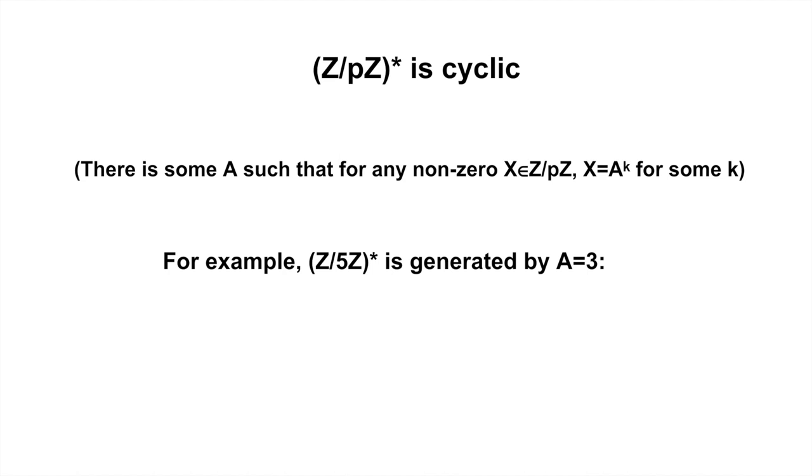For example, for p equals 5, we can choose a to be equal to 3, because the powers of 3 in Z over 5Z are 3, 4, 2, and 1.